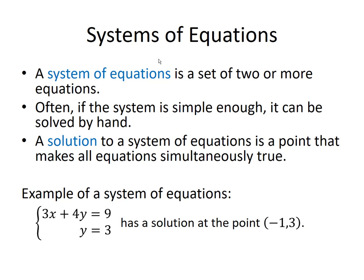Systems of equations. A system of equations is a set of two or more equations. Often, if the system is simple enough, it can be solved by hand. A solution to a system of equations is a point that makes all equations simultaneously true.